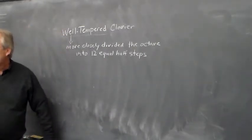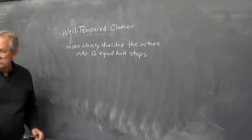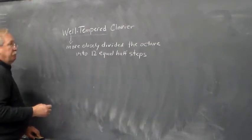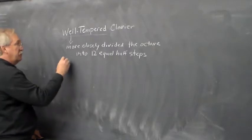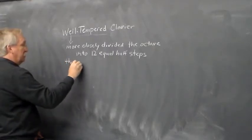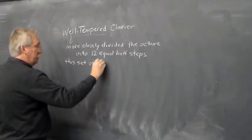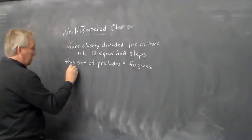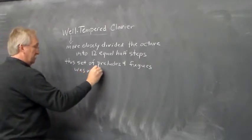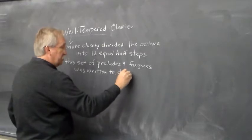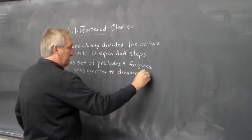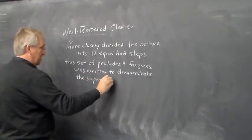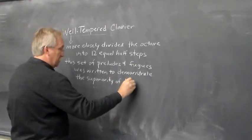Well-tempered tuning is slightly different than equal-tempered, in which you do have an exact mathematical division of the octave into twelve equal parts. And that's what we're used to now, is equal-tempered. But this was the idea. So this set of preludes and fugues was written to demonstrate the superiority of this well-tempered tuning.